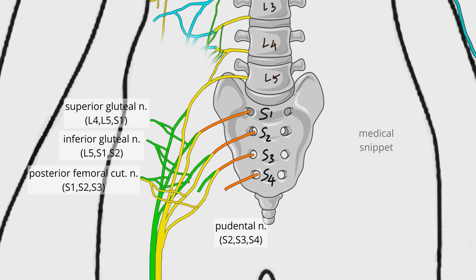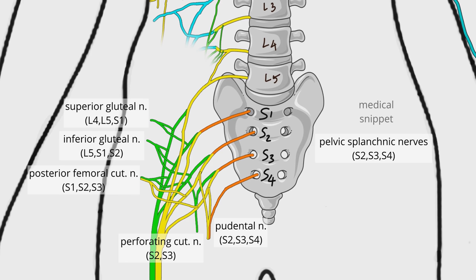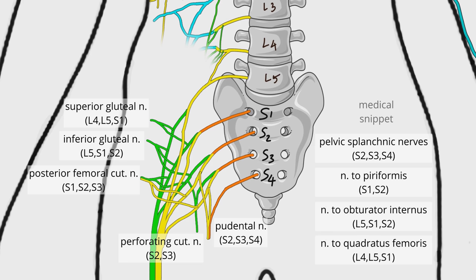The pudendal nerve is formed by the anterior divisions of the ventral rami of S2, S3, and S4. It gives rise to the inferior rectal nerve, perineal nerve, and dorsal nerve of the clitoris or penis. The additional branches of the sacral plexus include the perforating cutaneous nerve, which supplies the skin over the inferior gluteal region; the pelvic splanchnic nerves, which innervate the abdominal viscera; and other muscular branches — nerve to piriformis, nerve to obturator internus, and nerve to quadratus femoris.